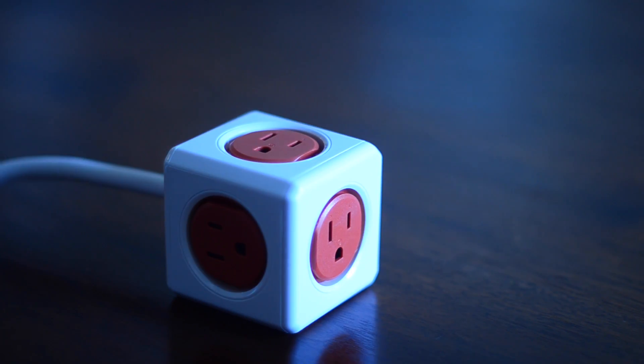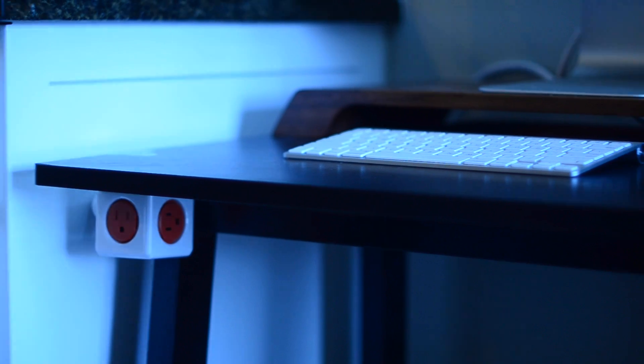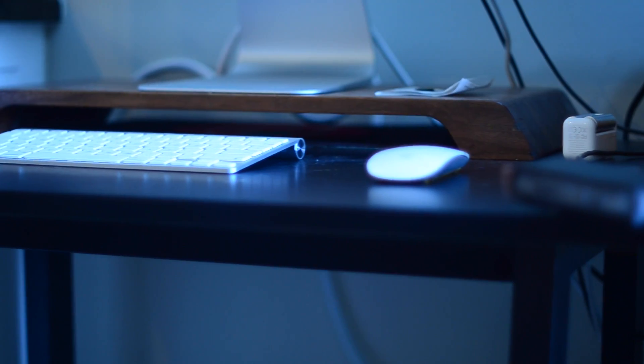Other than that, simply take those command strips, put them on the underside of the desk, put your box on it, and there you go, an under desk mounted electrical outlet.